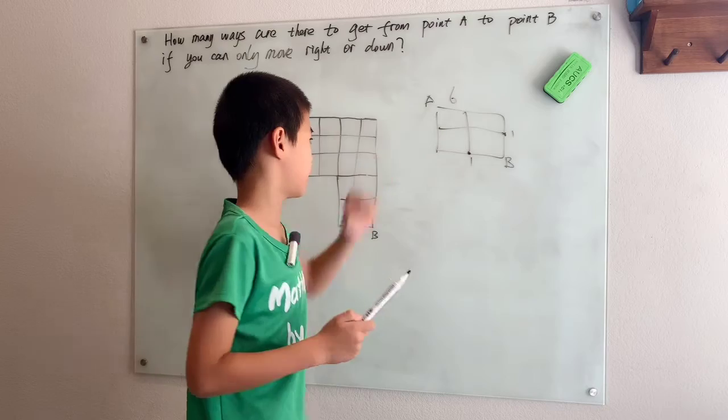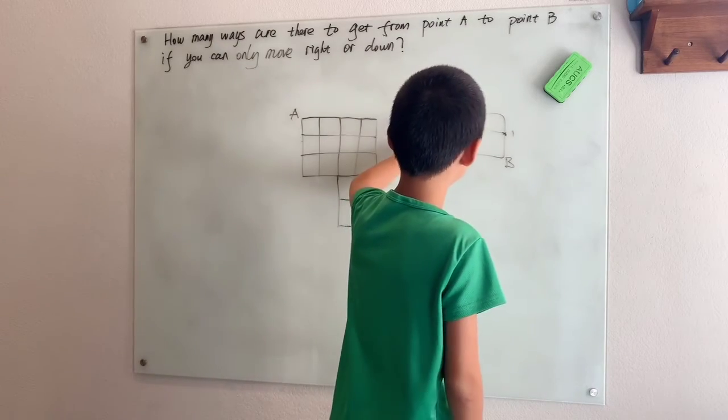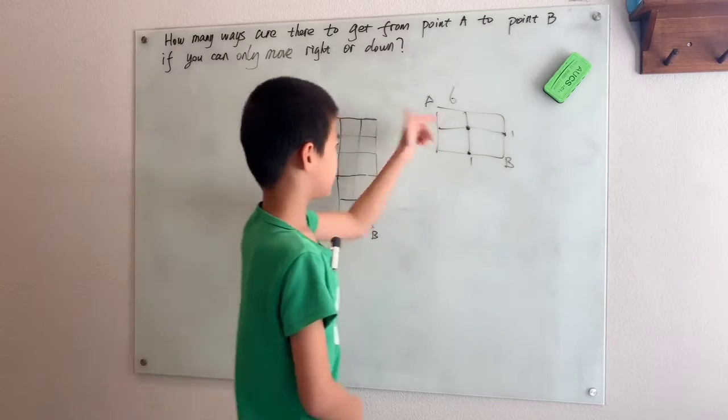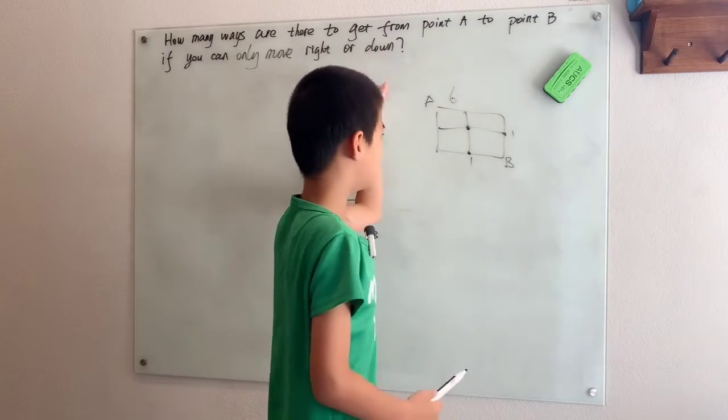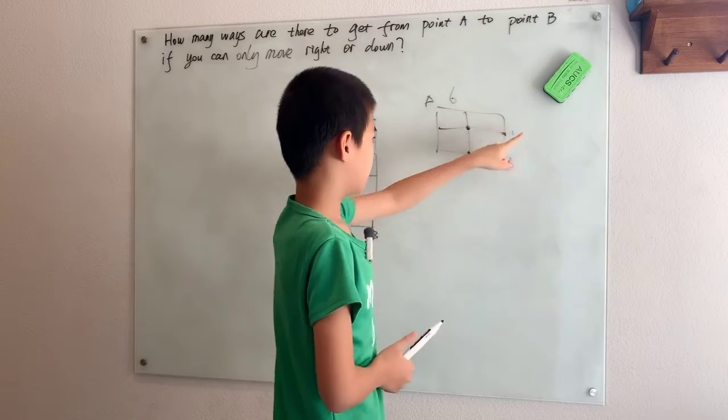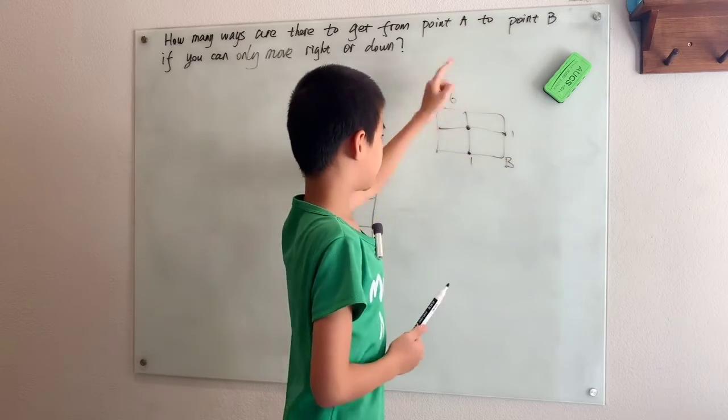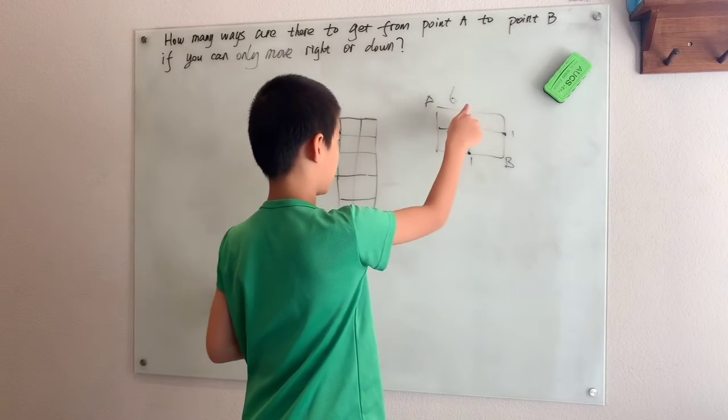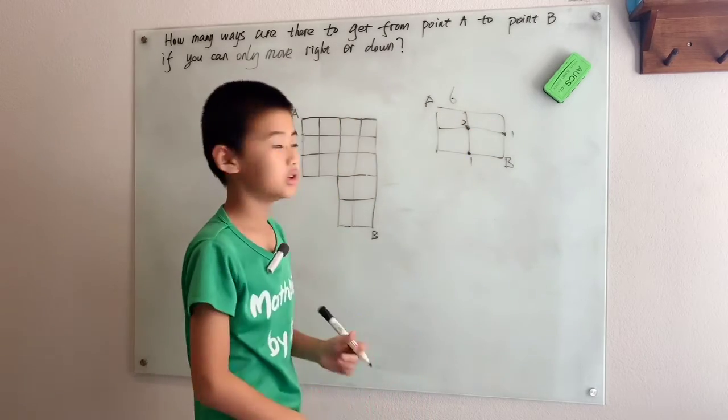So what if A was a little farther out? Say A was right here. Well then if you started from there, you had two choices. You could go right or you could go down. Well if you go right there's only one way back. If you go down there's only one way back. So one plus one, that's two ways back from this new point A to B.